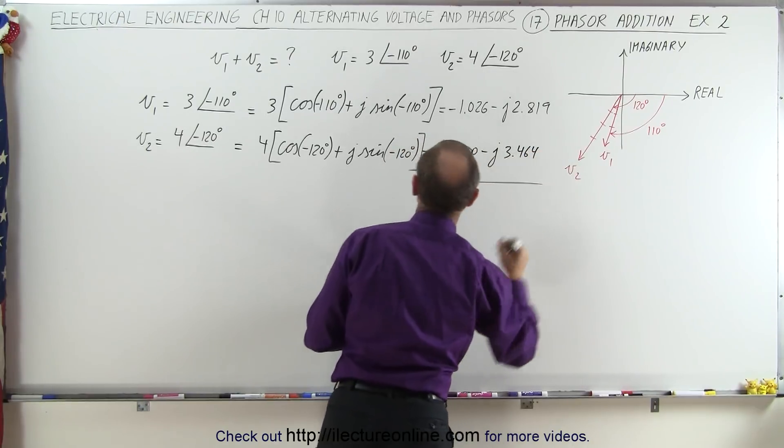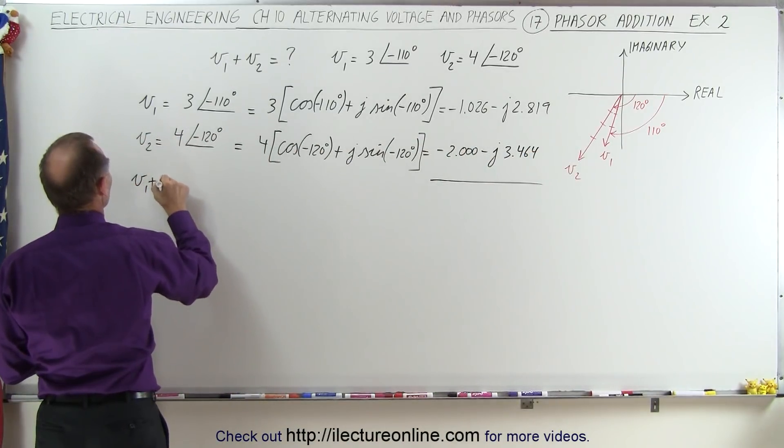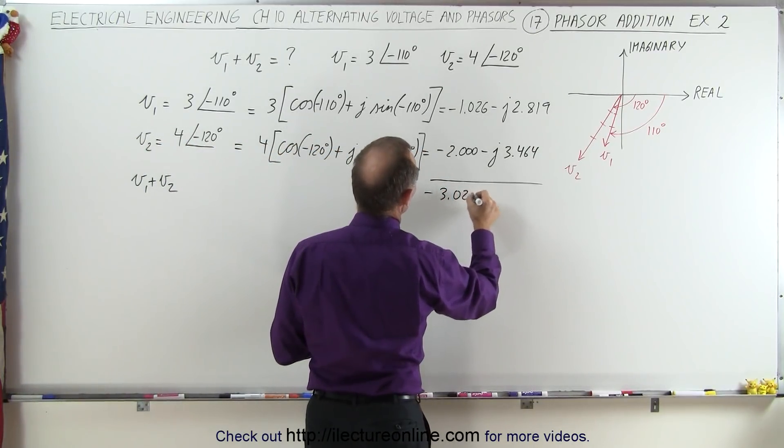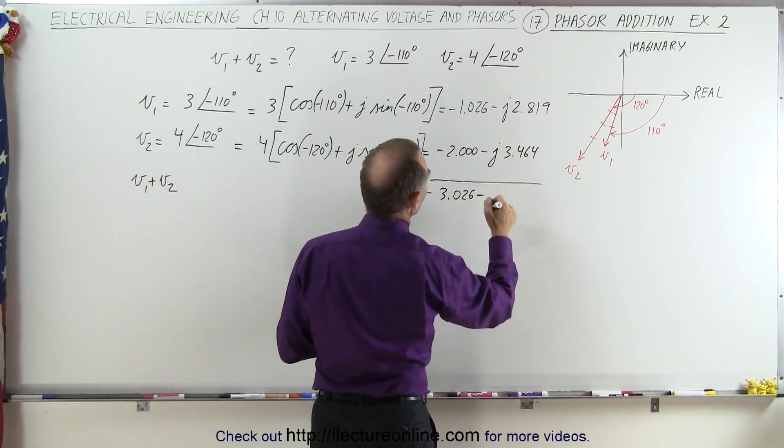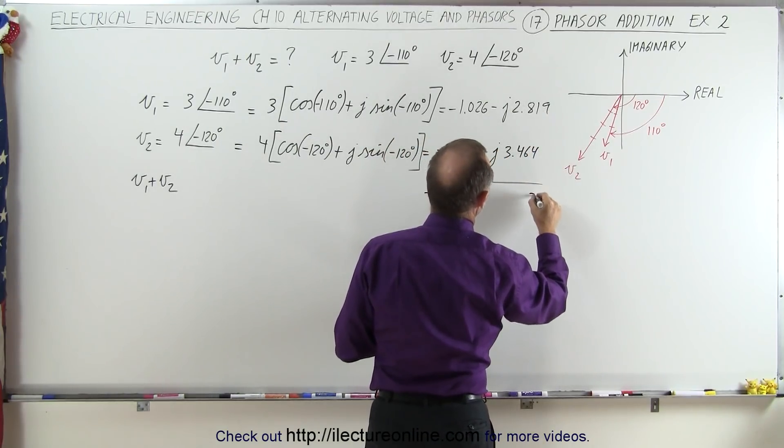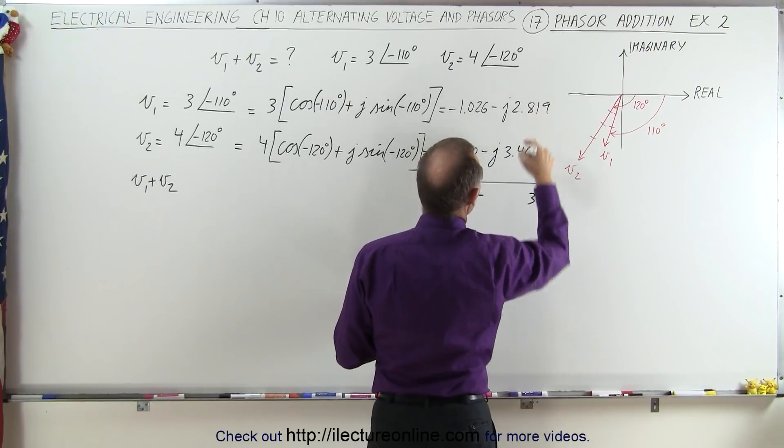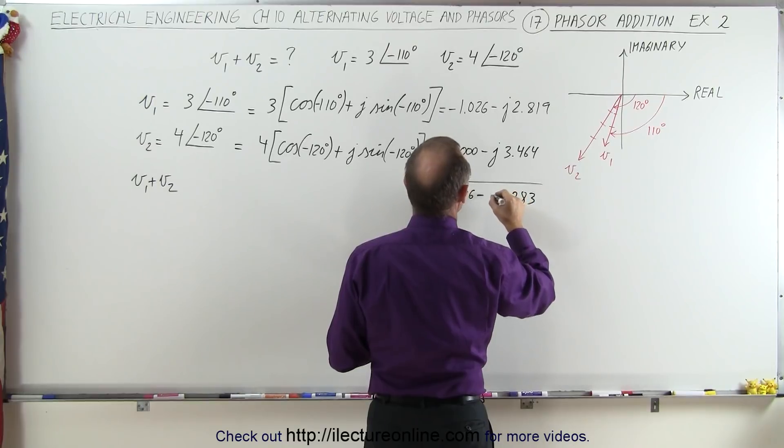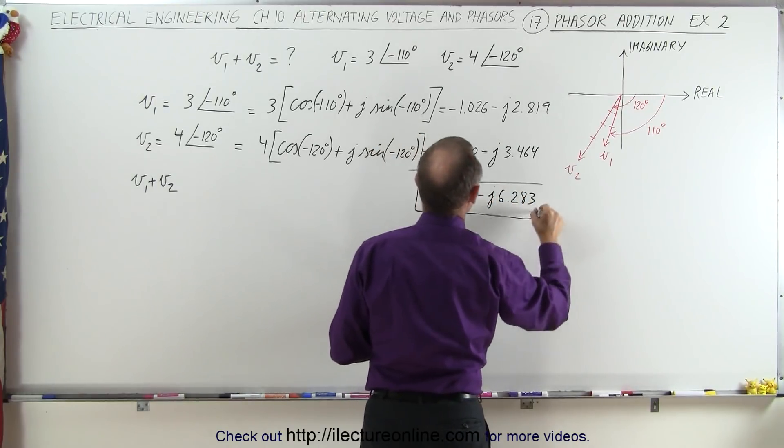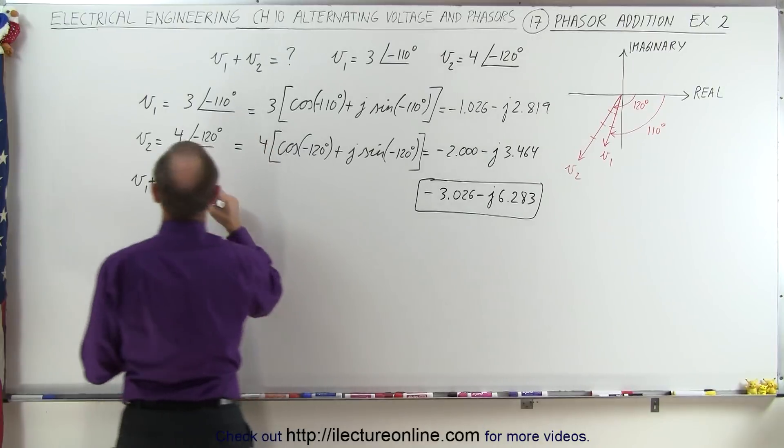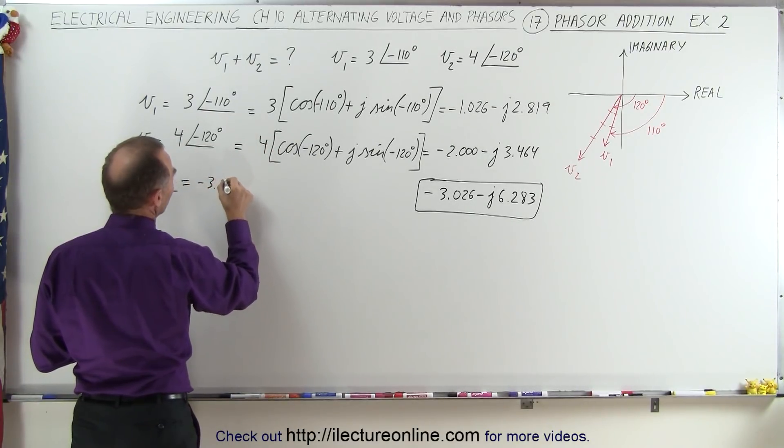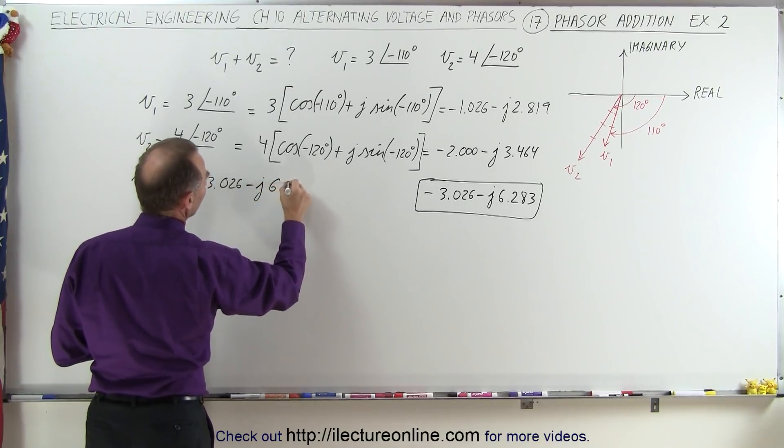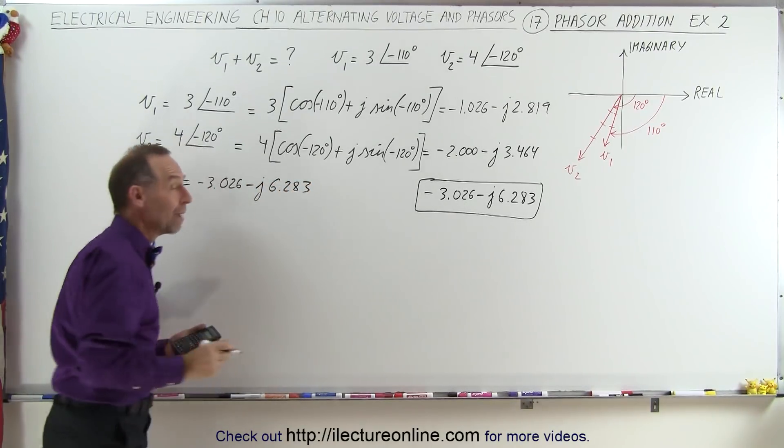Now we're going to add them together. So now we have V1 plus V2. When we add them together, notice we get minus 3.026 and this is minus, let's see, 9 plus 4 that's 3.1, that would be 6 and 8, 8 plus 4 that's 2.1, and that would be 6 and a j. So this here would be the sum of the two voltages. So this is equal to minus 3.026, that's the real part, minus j times 6.283, that's the imaginary part.